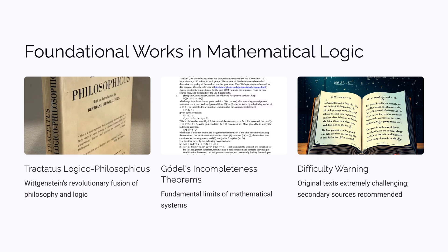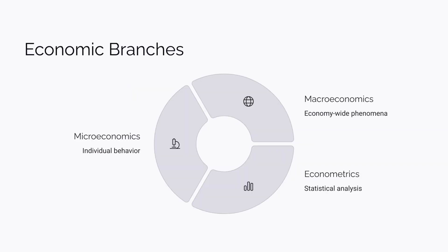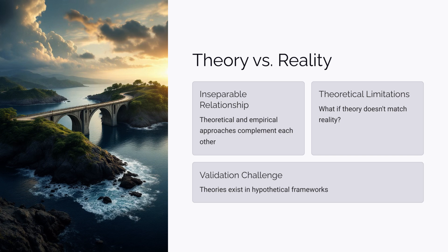Now, back to economics. In summary, theoretical economics involves presenting new theories through logical deduction from existing theories or laws, and the method of presentation relies heavily on mathematical logic. There's also empirical economics, which uses statistical methods to test the validity of economic theories, or to see how well they align with reality. Roughly speaking, microeconomics and macroeconomics fall under theoretical economics, while econometrics falls under empirical economics — though this is only a rough classification. In actual research, theoretical and empirical economics are inseparable.